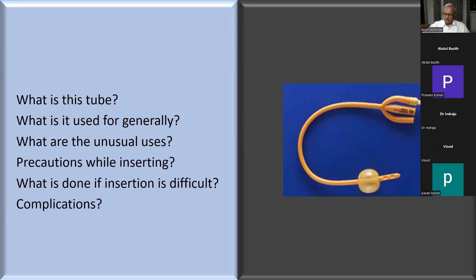Common narrow areas of the urethra where strictures form: the prostatic urethra due to prostatic enlargement, the bulbar urethra especially after previous instrumentation such as catheterization or cystoscopy, sub-meatal stenosis, and the bladder neck if you have done procedures on the bladder.